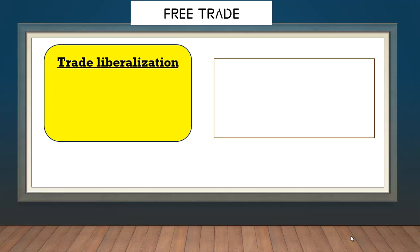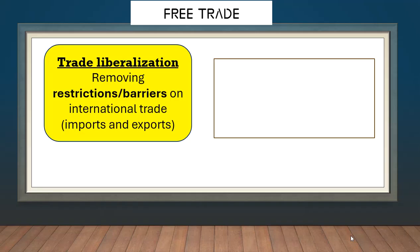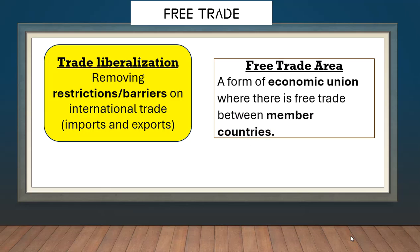Trade liberalization has to do with freeing trade. Just as a liberation movement frees people from restrictions, trade liberalization means you remove restrictions and barriers on international trade so that trade can be free. A free trade area is a form of economic integration where there is free trade between member countries.